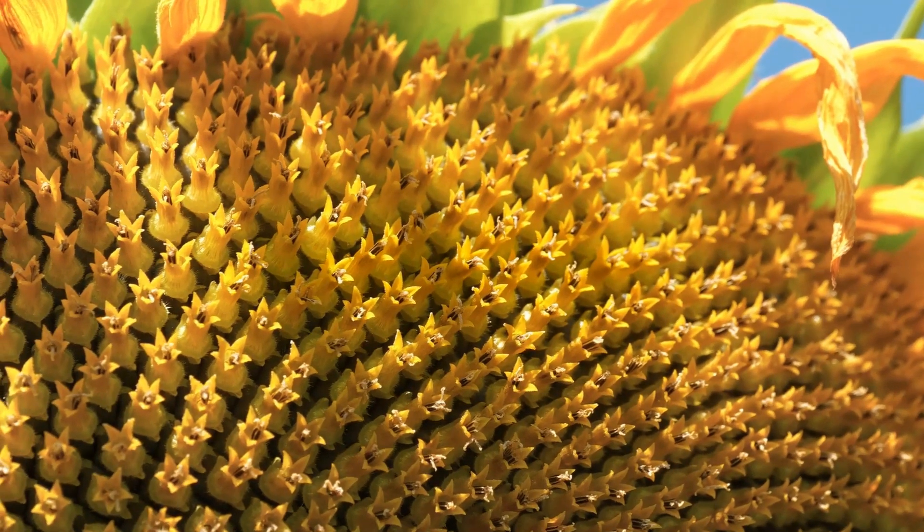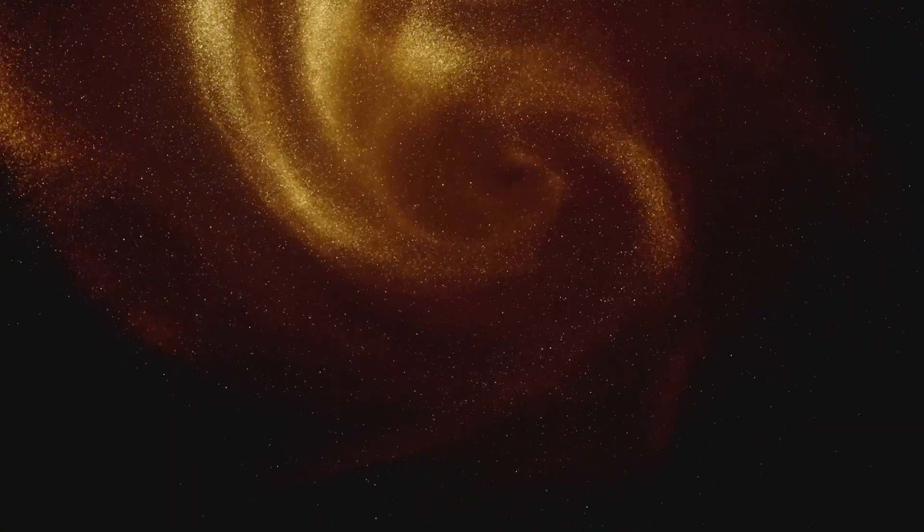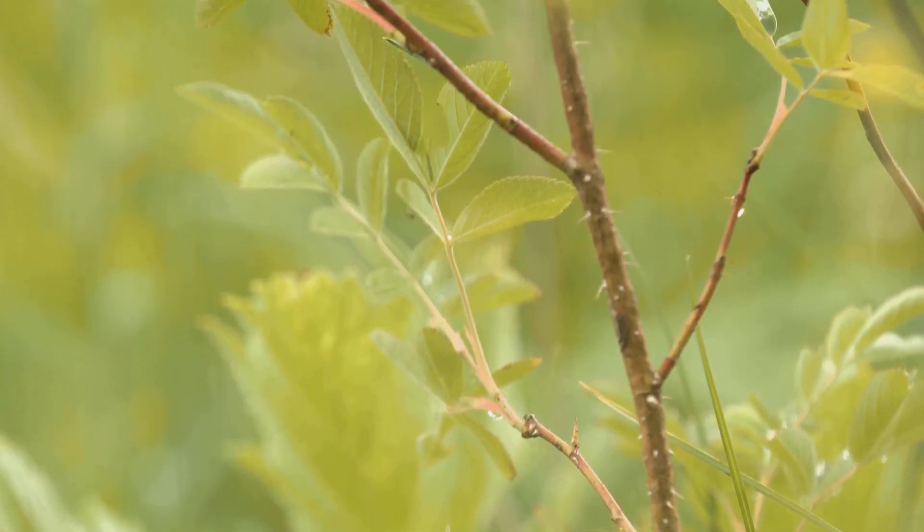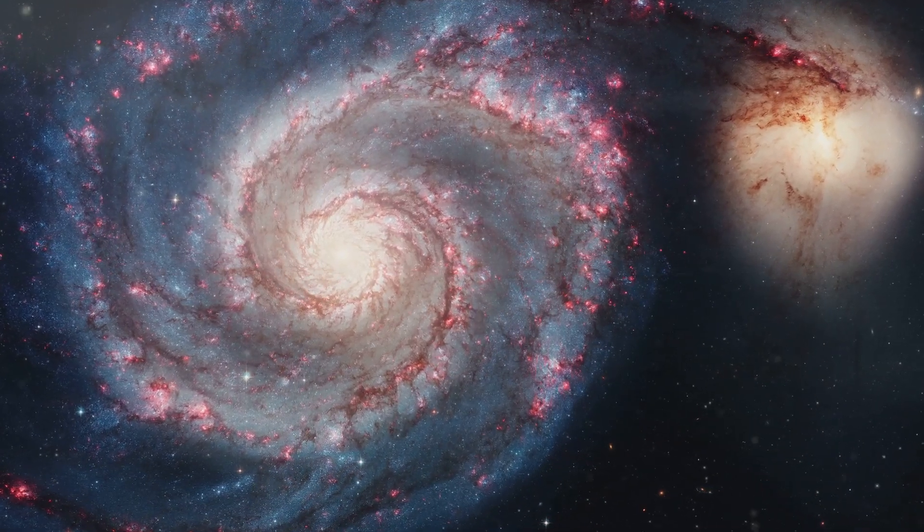The Fibonacci sequence, for example, is a series of numbers where each number is the sum of the two preceding ones, like 1, 1, 2, 3, 5, 8. This sequence appears repeatedly in nature, from the arrangement of leaves on a stem to the spiral patterns of galaxies.